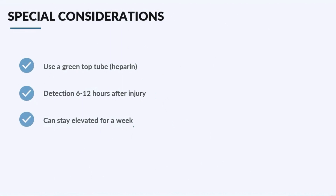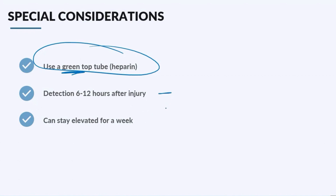So what do we need to know about the lab itself? When you get the blood, most times you're going to submit it in a green top tube, which has heparin in it. If your patient has only had chest pain or a heart attack for maybe less than an hour, your troponin levels aren't going to be high, so you're going to have to recheck them. You're going to see detection usually in six to 12 hours after the injury, and it peaks at around 24 hours. The other thing is it can actually stay elevated for up to a week.